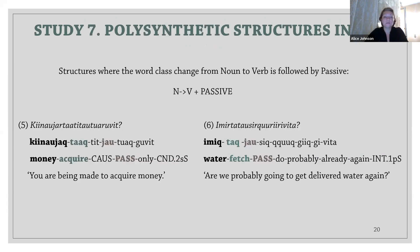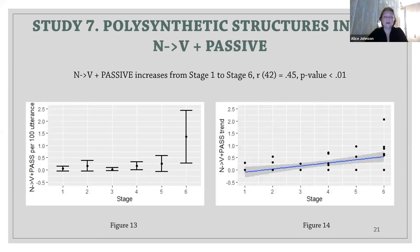In study seven, we looked at structures where a noun-to-verb change is combined with the use of passive. Both examples five and six show how such complex polysynthetic structures are constructed in Inuktitut. We found a positive correlation between the use of noun-to-verb plus passive structures by mothers and the stages of the children's linguistic development.